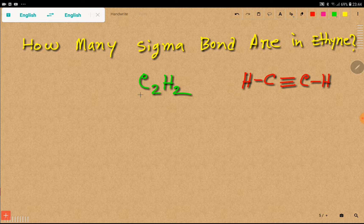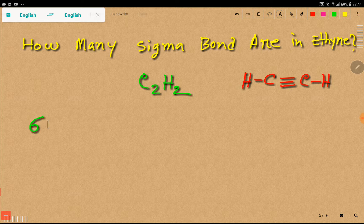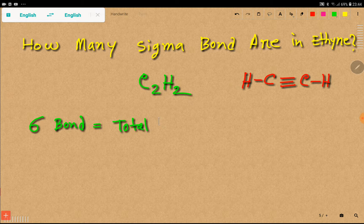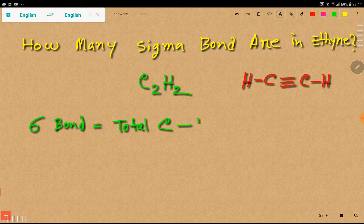So, let me write the formula for finding out the sigma bond. So, number of sigma bonds equal to total carbon minus 1 plus other atoms.